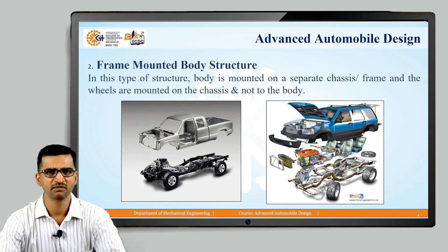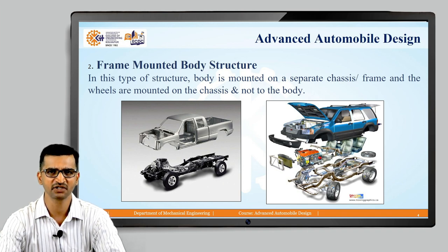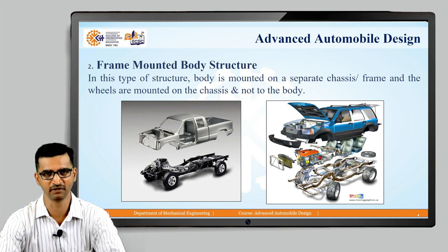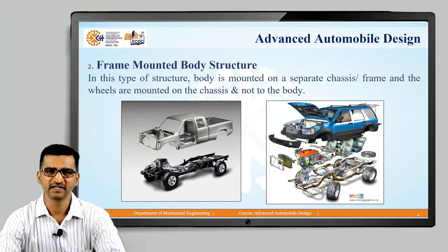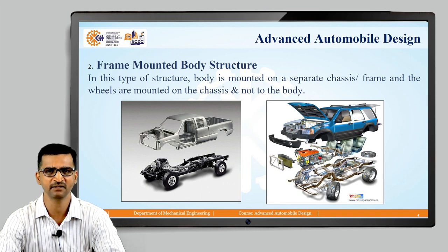As far as monocoque structure is concerned, the main benefit is weight reduction — we can achieve a huge amount of weight reduction. The most important benefit, because of which nowadays all car manufacturers are going for monocoque, is safety. Monocoque structures are inherently safer compared to frame mounted structures because of energy absorption and principles we will discuss in next units. One more advantage is that it is compact. However, there are disadvantages: the most important is cost, as the design efforts and challenges are huge. It is difficult to design and expensive to manufacture because it requires complicated processes like spot welding and laser welding.